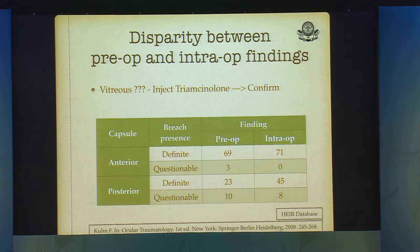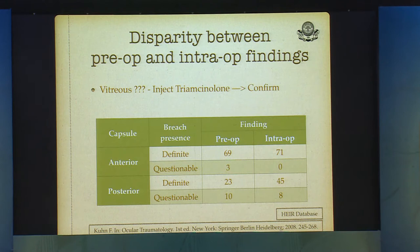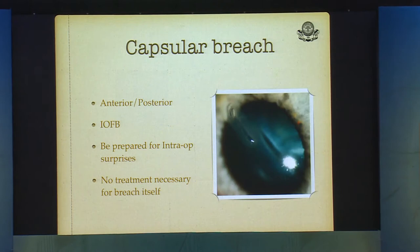Generally, the anterior capsule, if involved preoperatively, is also involved intraoperatively. But posteriorly, sometimes you suspect the posterior capsule is intact; however, you might be surprised to find trauma and actual damage there as well. It can be anterior or posterior breach, and you can have an intraocular foreign body, so be prepared for any intraoperative surprises.